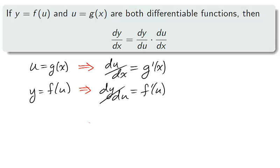Similarly, y equals f of u means that the derivative of y with respect to u is f prime of u. And since g of x is just a placeholder for u, we find that the derivative of y with respect to u is f prime of g of x.